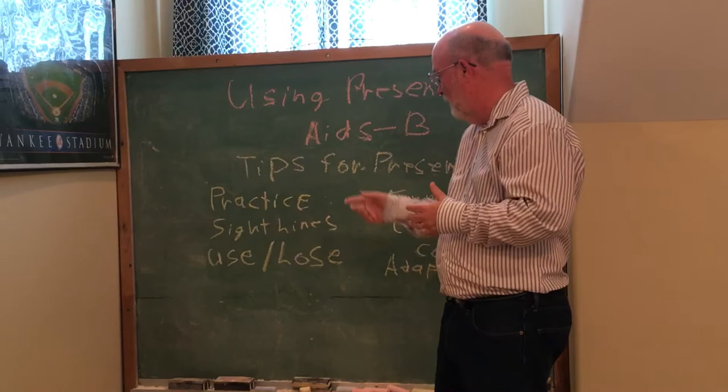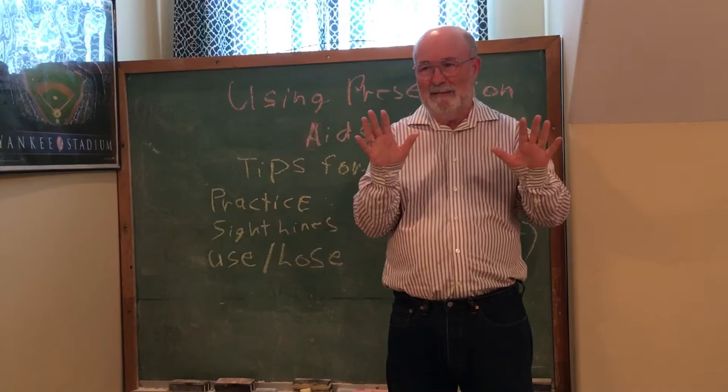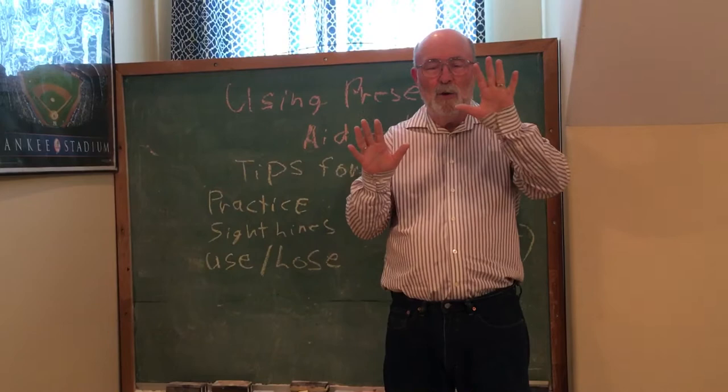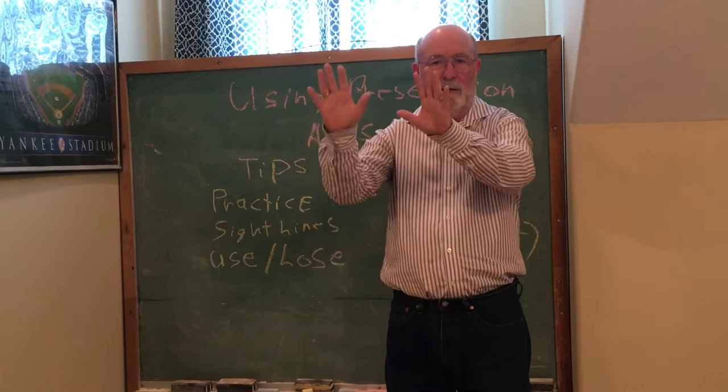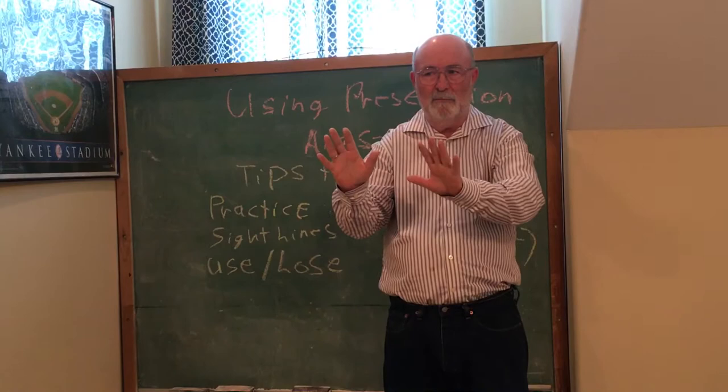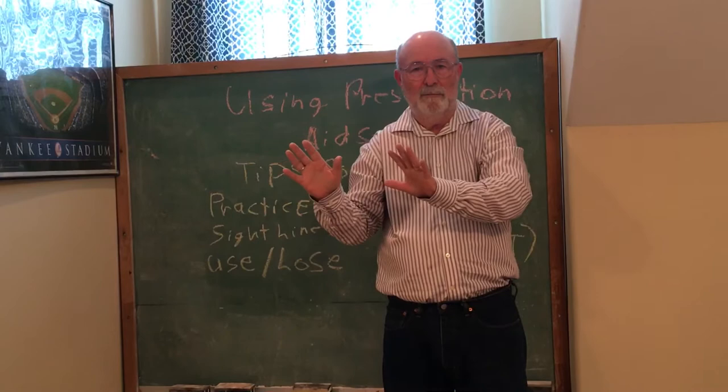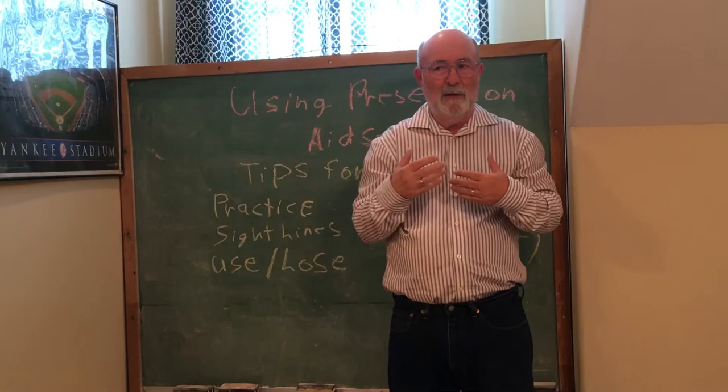Sight lines. This is an important one because you have to make sure that people can see it. You need to go out into the audience where they're going to sit and check — if I put my poster here, can everybody see all of it? If they can't, you need to either move it where they can see it, or make it bigger. You need to consider that so you know what you've got, otherwise they may not be able to see it.